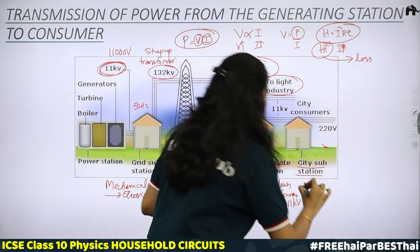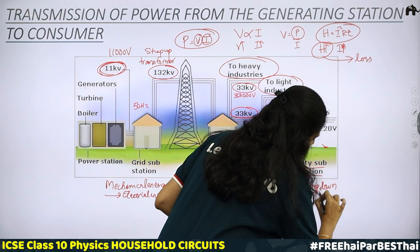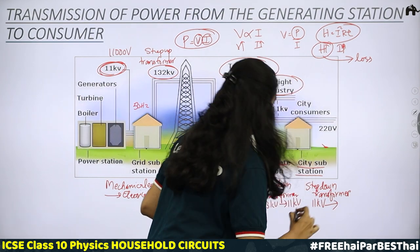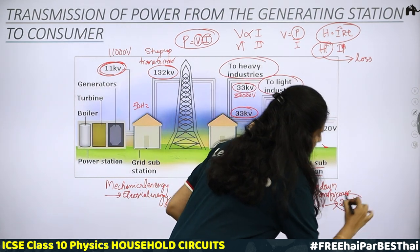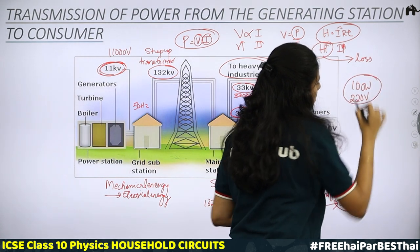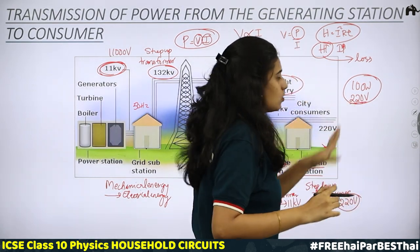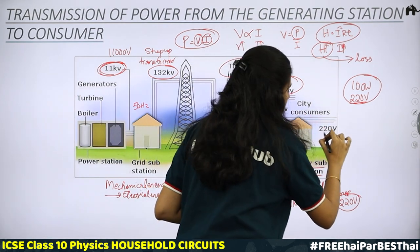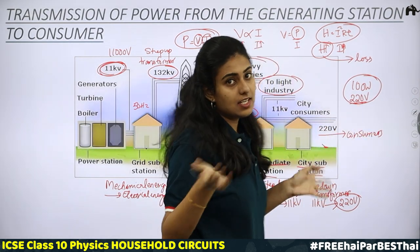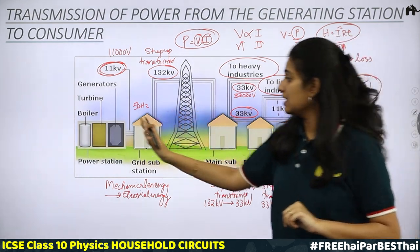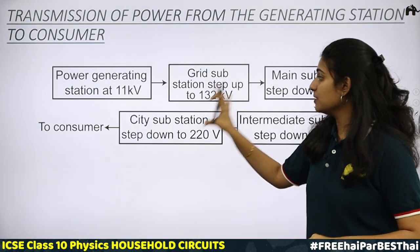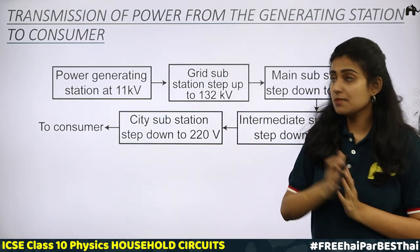This 220 V reaches the consumers. Our main switchboard will have this 220 V to run different appliances at home. This is how transmission of power works from the generating power station to the consumer. Here we have a simple block diagram which helps us understand easily how the transmission of electricity from the generating power plant to the consumer works.